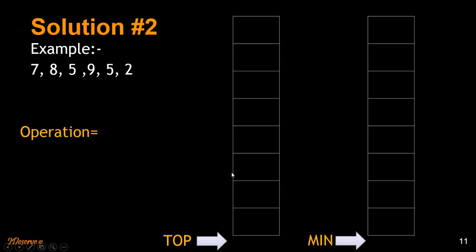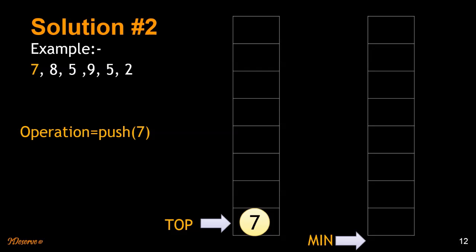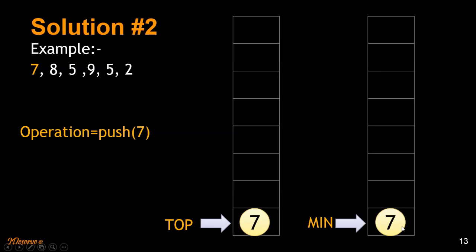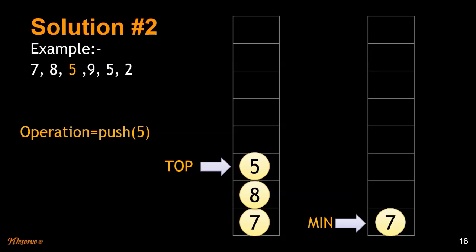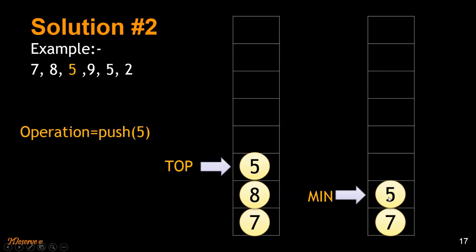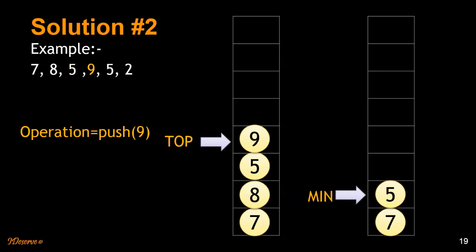Let's walk through the example. We push 7 first — since the minimum stack has no elements, we push 7 there as well. Next element is 8: 8 is greater than 7, so we don't push anything to the minimum stack. Then we have 5 — since 5 is less than 7, we push 5 to the minimum stack. The next element is 9: 9 is greater than 5, so we don't push anything.